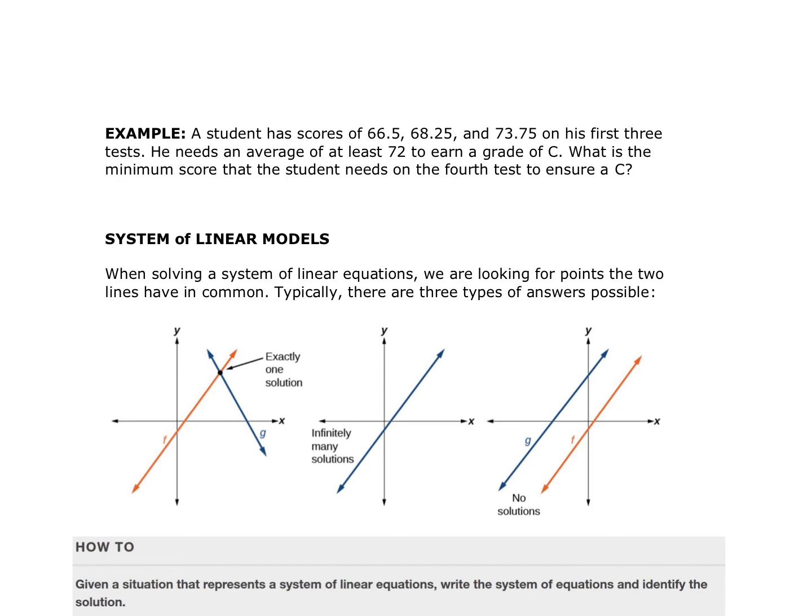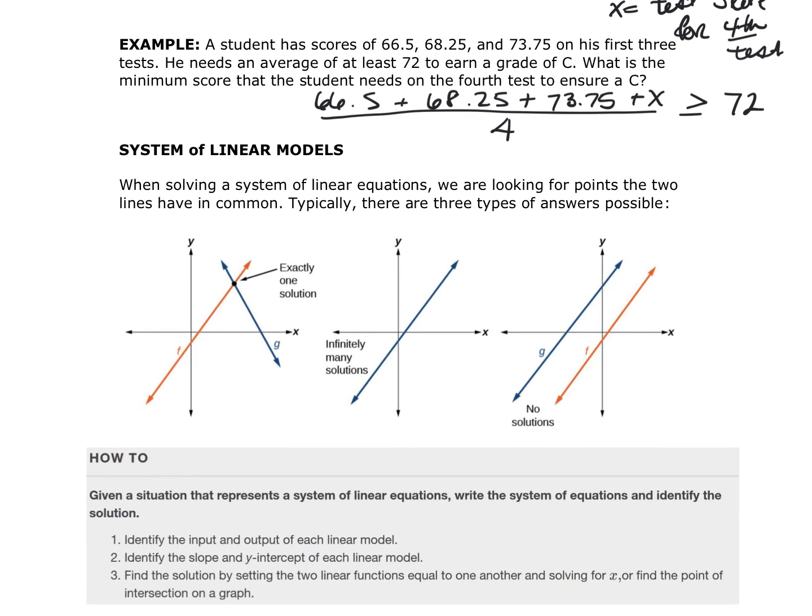So a student has scores of 66.5, 68.25 and 73.75 on his first three tests. He needs to average at least a 72 to earn a C. What is the minimum score that the student needs on the fourth test to ensure a C? Well, this is a linear inequality. What we're doing is 66.5 plus 68.25 plus 73.75 plus X where X equals the test score for the fourth test. Now since it's an average, we divide by the four scores and we need this to be greater than or equal to 72. And then you're going to go ahead and solve for that. Don't forget to answer in full, complete sentences.